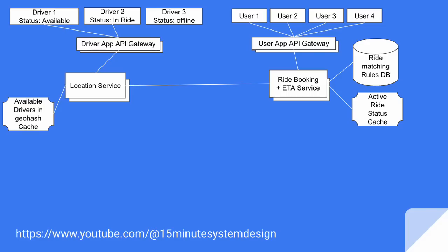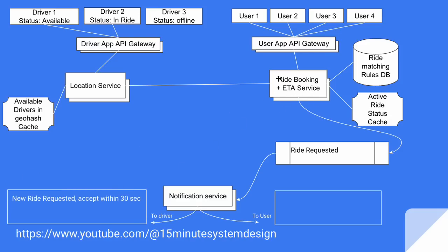When the user is happy with the ETA at source, they place a cab request to the ride booking service mentioning the user ID and destination. The ride booking service then asks the location service to provide an updated list of nearby available drivers so that it can send a cab request to all of them. The ride booking service notifies all active drivers, and one of these drivers needs to accept the request within 30 seconds, else the request will expire. Once a driver accepts the cab request, other drivers need to see this request as canceled.